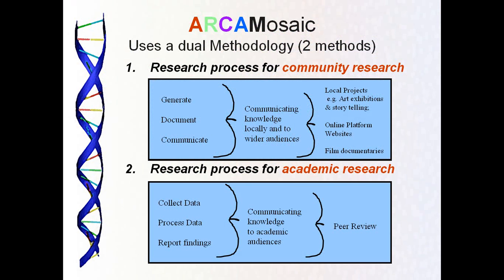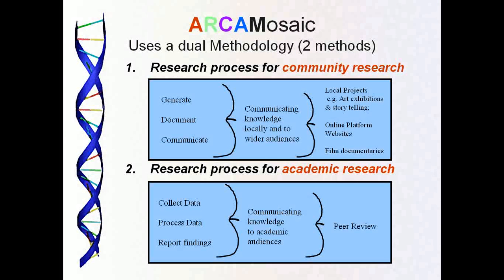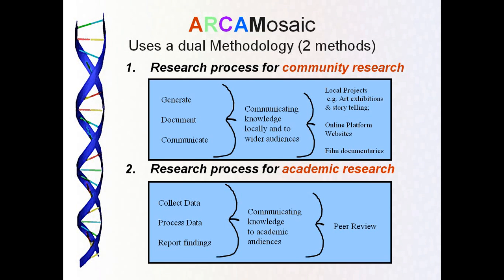Processing the data used a research method called interpretive phenomenological analysis — a way of researching lived experience and meaning-making processes, in this case how people make meaning through art and discussion. Reporting the findings is through the usual academic channels, communicating knowledge to academic audiences. There is an action research community of academics and a journal called Action Research. Peer review, publication, and conferences are an important part of this academic process. This dual model creates and communicates knowledge on two levels, making it quite versatile.